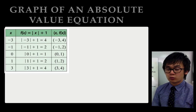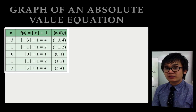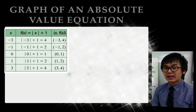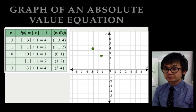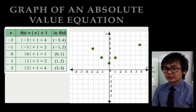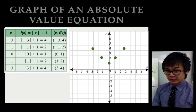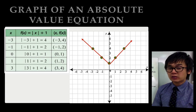For the last point, if x is equal to 3, f of x will equal 4. So our last ordered pair is 3 and 4. The graph of an absolute value is v-shaped. Plotting negative 3 and 4 on the second quadrant, negative 1 and 2 also on the second quadrant, 0 and 1 along the y-axis, then 1 and 2 and 3 and 4 — you can see a v-shaped graph. Connecting the dots, the graph of f of x equal to the absolute value of x plus 1 is a v-shape.